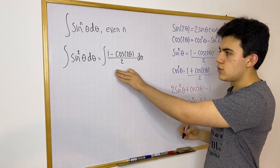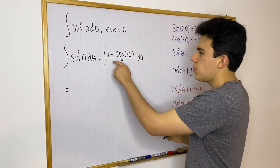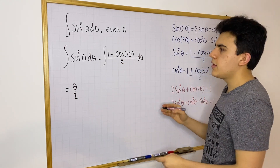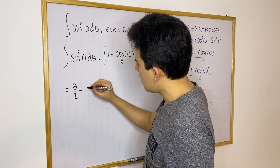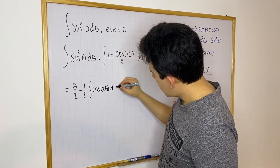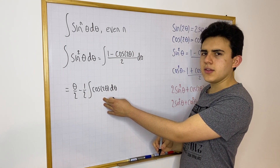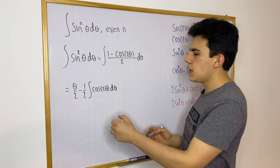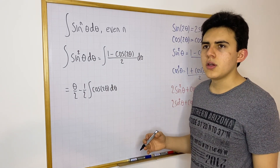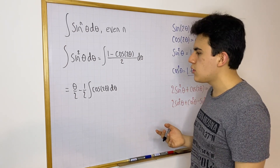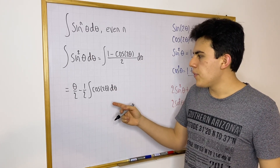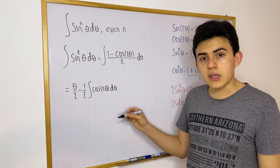How can we integrate this? It's really easy — just integrate each term. One term is just a half, so that gives us θ over 2. Now for the integral of cosine of 2θ dθ: you could use substitution, or just reason it out in your head. What function gives a derivative of cosine? That's sine. So if we take the derivative of sine of 2θ, using the chain rule that's 2 times cosine of 2θ.